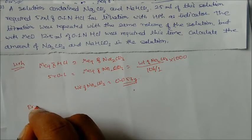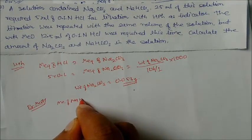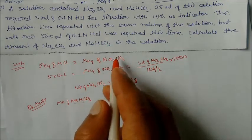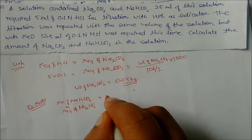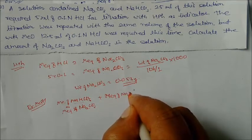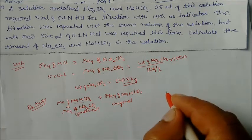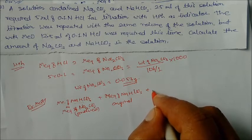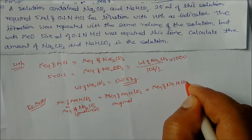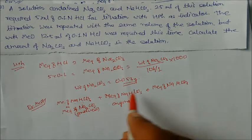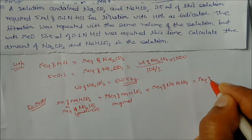To find sodium bicarbonate, we use the methyl orange endpoint. At the methyl orange endpoint: milliequivalents of NaHCO₃ originally present, plus milliequivalents of Na₂CO₃ that was half-neutralized (i.e., the Na₂CO₃ that produced NaHCO₃ upon half-neutralization), equals milliequivalents of HCl. So we write: milliequivalents of NaHCO₃ (original) + milliequivalents of Na₂CO₃ (half neutralized) = milliequivalents of HCl.